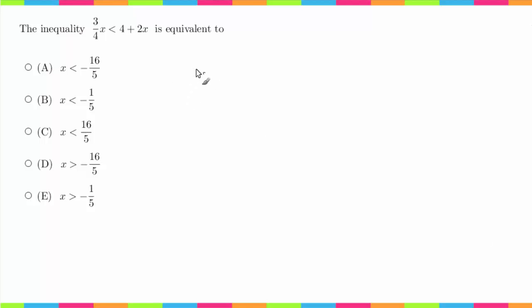So we're gonna rewrite it: 3/4x is less than 4 plus 2x. Now what we're gonna do is get all of the x's on the same side, so I'm gonna subtract 2x from both sides. That's gonna give me 3/4x minus 2x is less than 4.